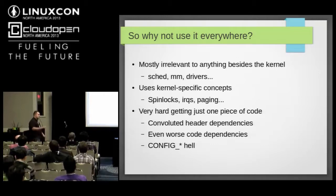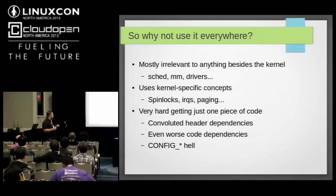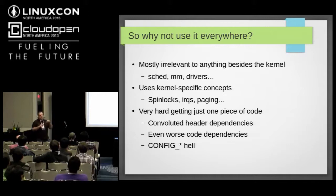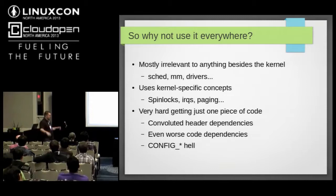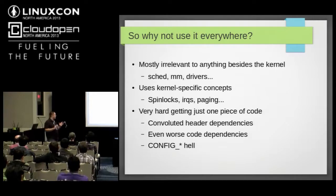It's also very hard to just take a small piece of code out and put it into a userspace project, because first you have a bunch of kernel headers which forcefully refuse being compiled from userspace. Even if you get past those headers, there are code dependencies — that little code depends on some other code somewhere else, which depends on a whole bunch of other headers. And even if you get past that, you have all those config options sprinkled all over the kernel, so you still usually can't compile a small independent piece of code without dealing with those config options.